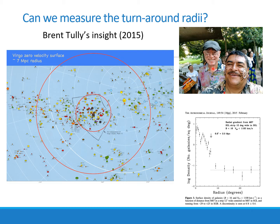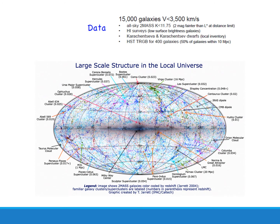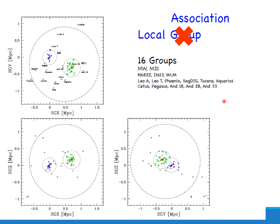He used data from surveys with more than 15 galaxies with velocities and began studying the distribution and dynamics of galaxies to infer the second crossing radius. One of the things he found — and he wasn't the first to suggest — is that the local group is not actually a group but an association. Each of M31 and the Milky Way are considered groups, and there are 16 groups in the whole association. Each of these overdensities behaves as a group, so the definition of group is extended.